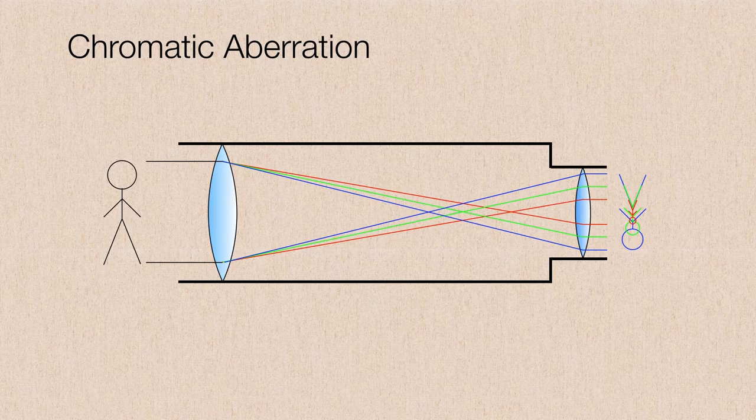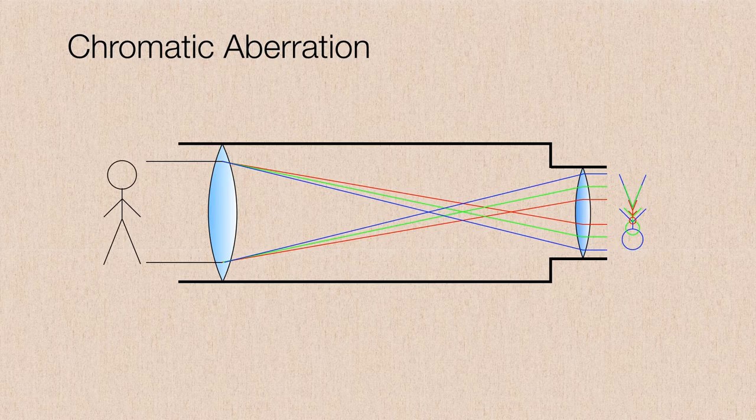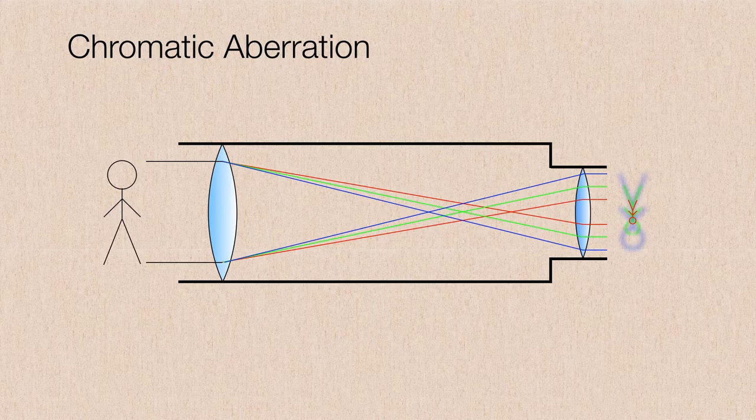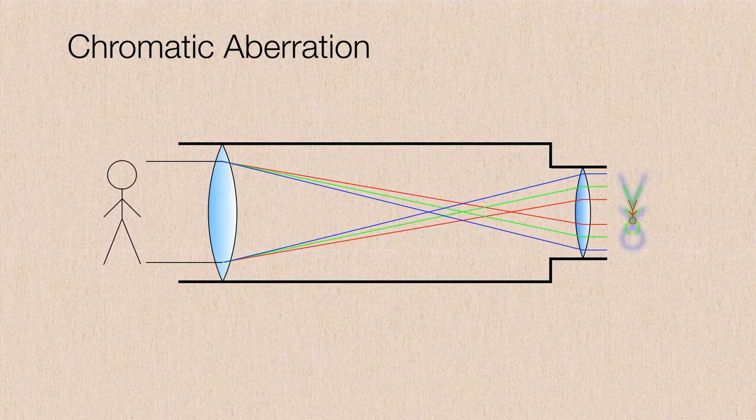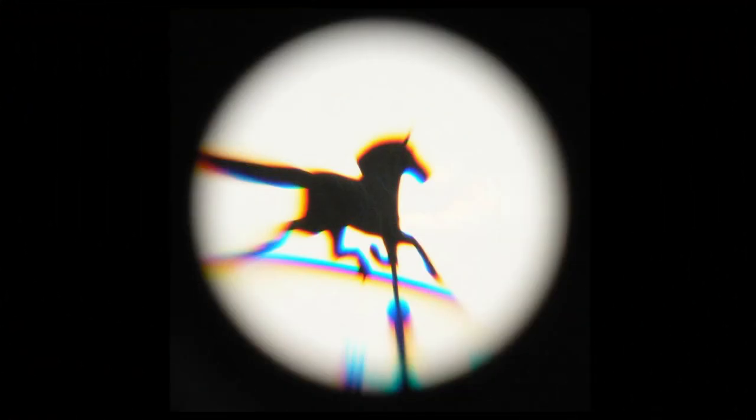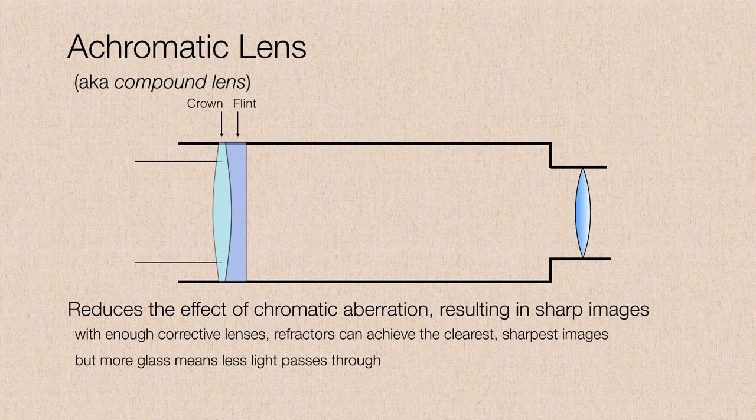And so different colors form images at different focal lengths from the objective. But it's even worse than that because you can't focus on all three of these images simultaneously. You have to pick one color and then let the rest just blur out. So this is a phenomenon known as chromatic aberration. And if you ever use a lens that does not have any corrective elements in it, then you're going to see this effect in action. So here's a weather vane. We could see colors just spilling everywhere.